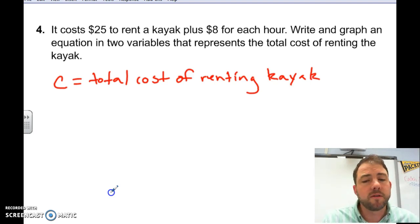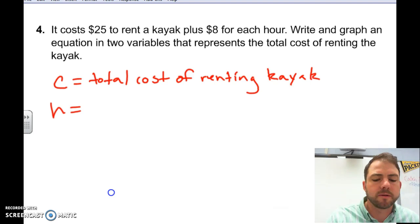Now, we also need to remember we're writing an equation with two variables. So, we're going to have to define another variable. So, what other information are we missing? Well, we know it costs $25 to rent a kayak plus $8 for each hour. It appears that we're not quite sure how many hours we're renting the kayak for. So, that needs to be our other variable. So, we'll let that be H since we're representing hours. And we'll define that as hours rented.